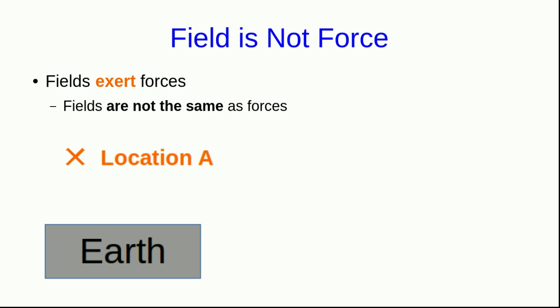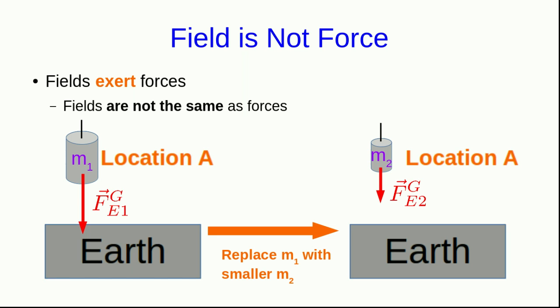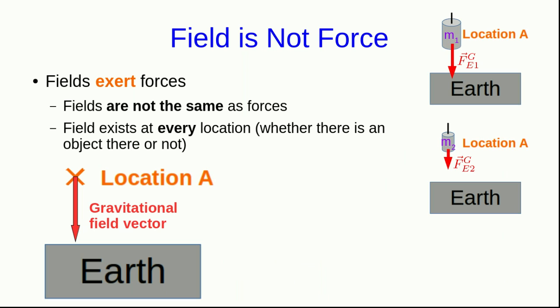Let's say we're talking about some location A near the Earth, near the surface of the Earth. Then we can place some mass, let me call it M1, at location A, and the Earth will exert a gravitational force on it. Now I could replace M1 with some, say, smaller M2. Well, M2 is going to experience a smaller force due to the Earth. However, we believe that there is a gravitational field vector at the location A. Well, in fact there's a gravitational field vector at every location, but at the moment we're interested in its value at location A.